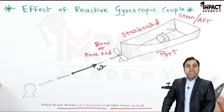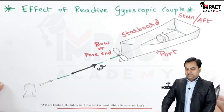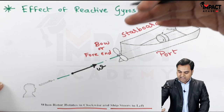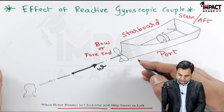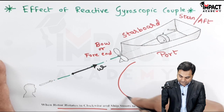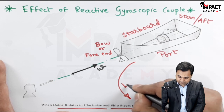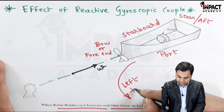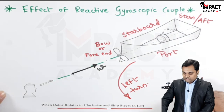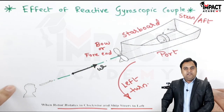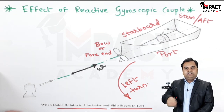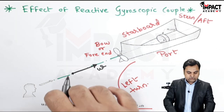For the ship steering left, we imagine that we are inside the ship and it is moving towards the left side, taking a left turn. When the ship takes a left turn, it is rotating about a vertical axis in that direction.